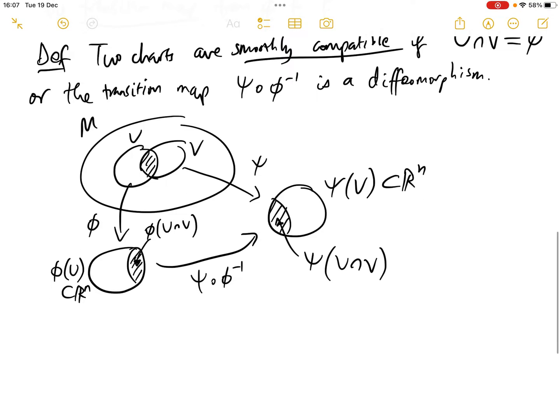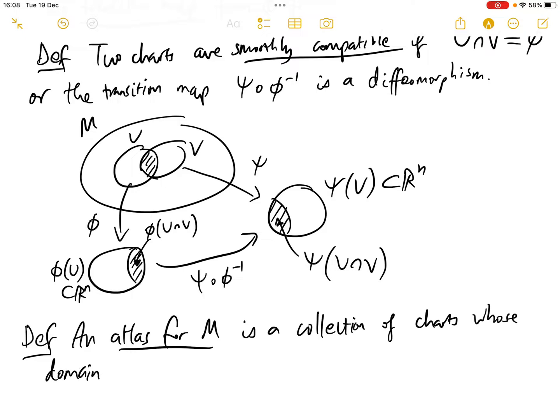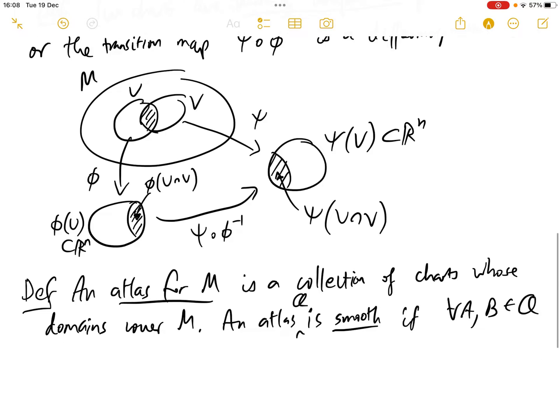Next definition is an atlas for M is a collection of charts whose domains cover M. And we say an atlas is smooth if every pair of charts in the atlas are smoothly compatible. So an atlas A is smooth if every pair of charts in A are smoothly compatible.